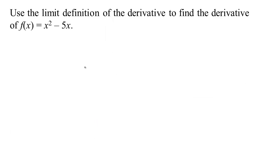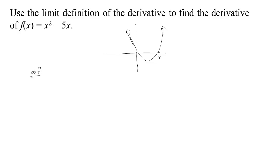Let's do an example of working with that definition. We have the function f of x equals x squared minus 5x. If we look at that function, it looks something like this — here's zero, here's five. It graphs as a parabola that opens up and goes through there. We want to find the function that, given a point, tells us what the slope of the tangent line is. So remember, our definition is that df/dx, or f-prime of x, is the limit as h tends to zero of [f(x + h) − f(x)] / h.